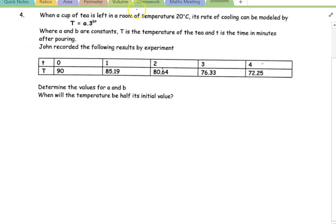When a cup of tea is left in a room at temperature 20 degrees, its rate of cooling can be modeled by T equals A times 3 to the power of BT. That little dot there is times in this case, where A and B are constant numbers. T is the temperature of the tea, and small t is the time in minutes after pouring.